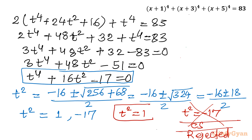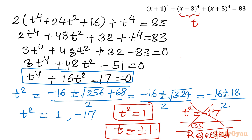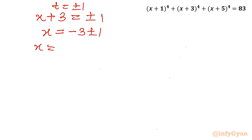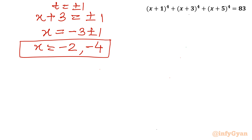From t² = 1, we get t = ±1. Now recalling that t = x+3, we substitute back: x+3 = ±1. Subtracting 3 from both sides: x = −3 ± 1. Taking the plus sign: x = −3+1 = −2. Taking the minus sign: x = −3−1 = −4. So there are two real solutions: x = −2 and x = −4.